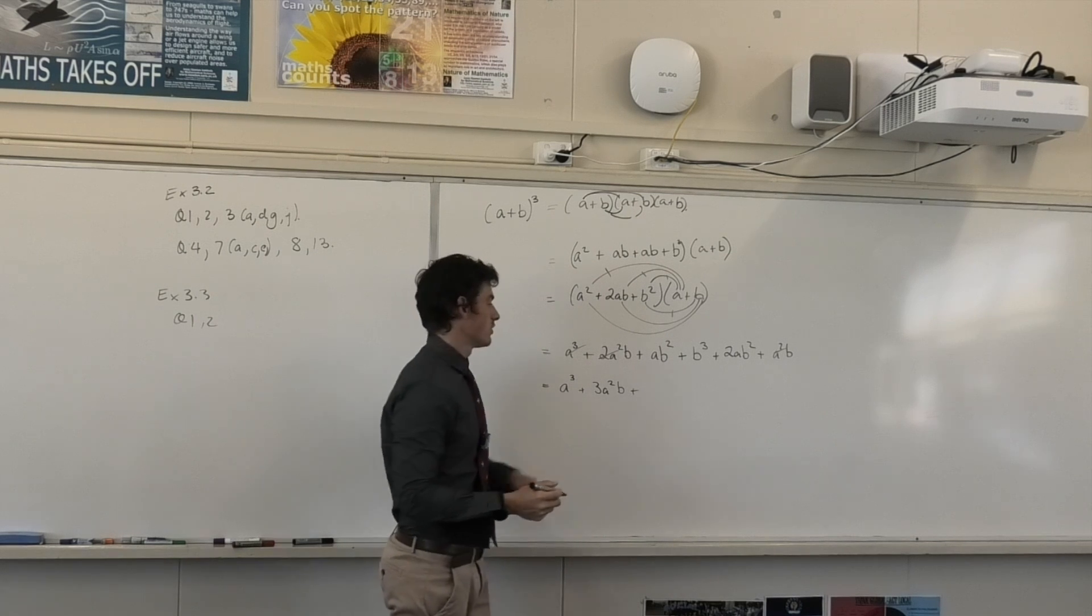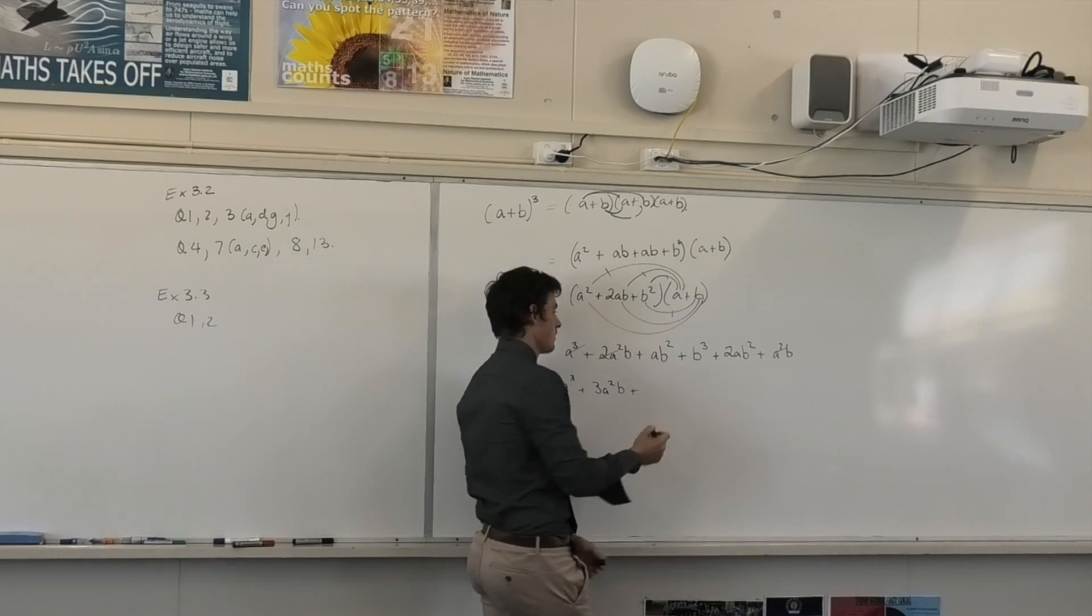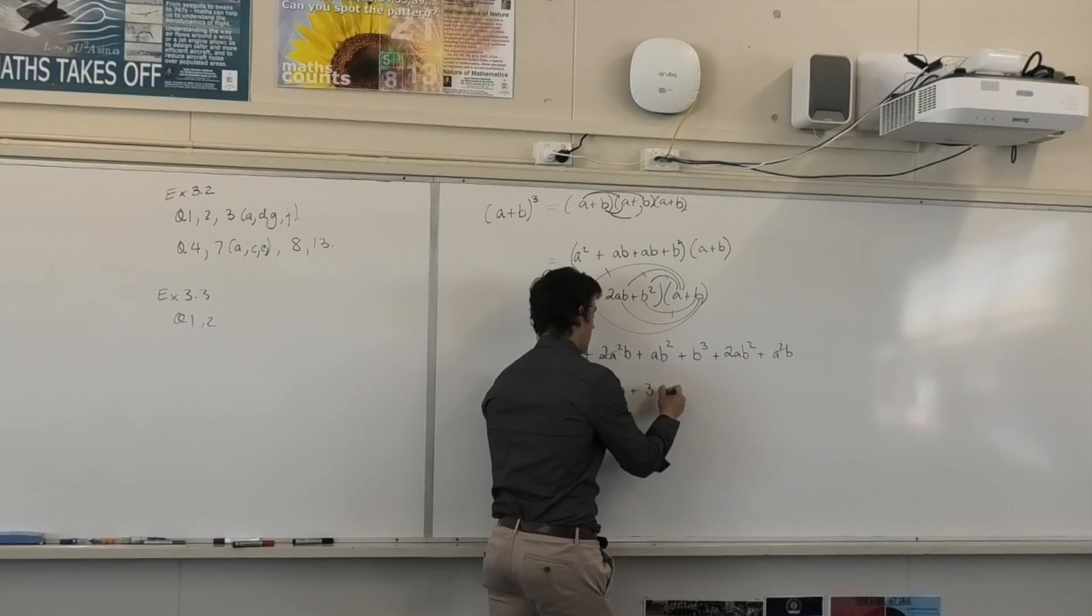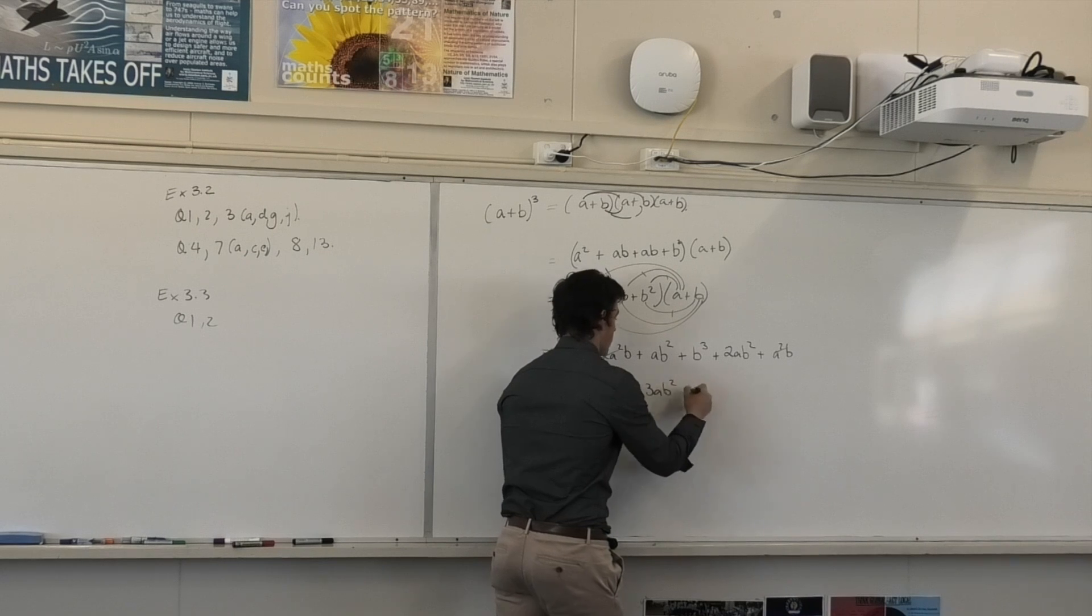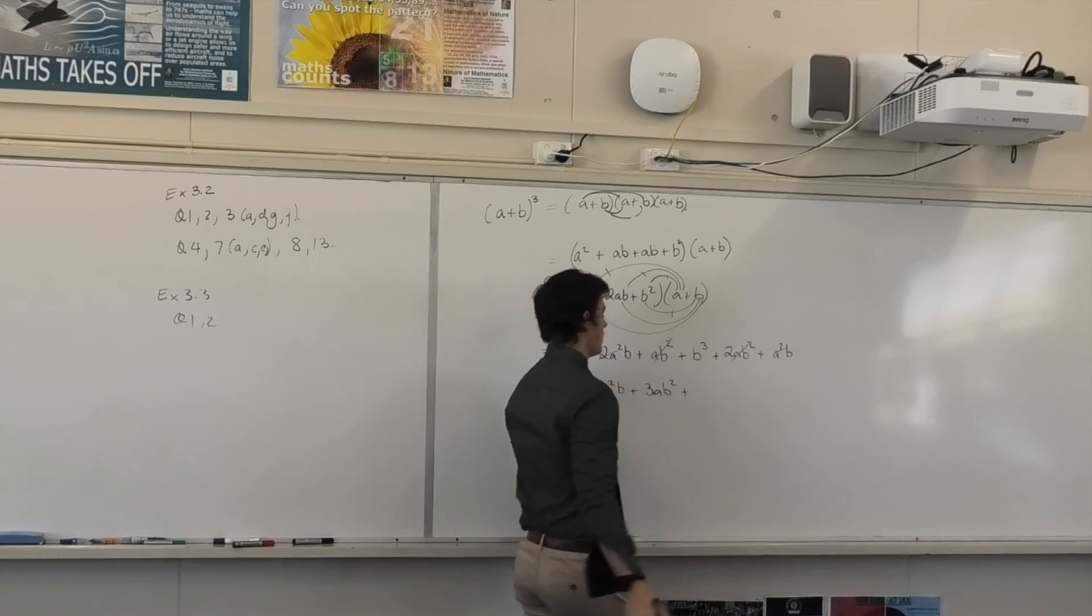AB squared. I've got two lots of those, haven't I? So I've got that one plus that one. Excuse me. 3AB squared. Plus? B cubed.